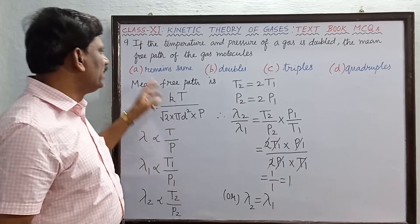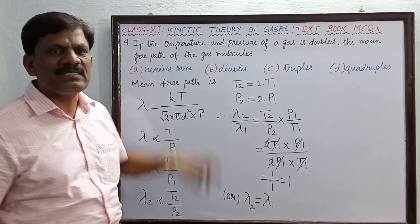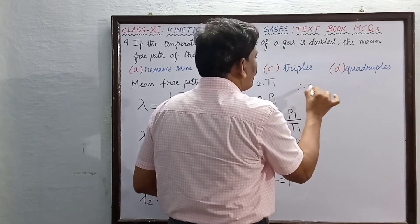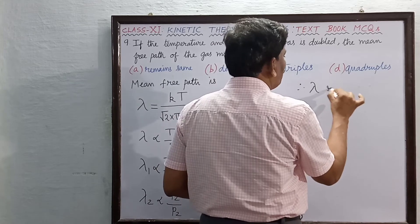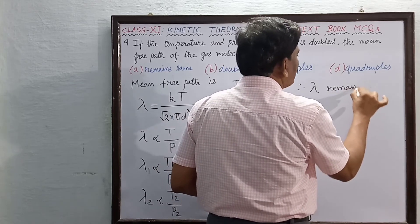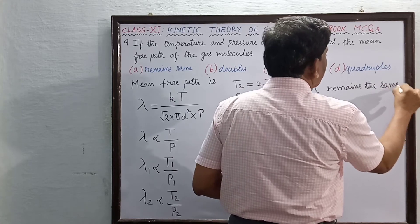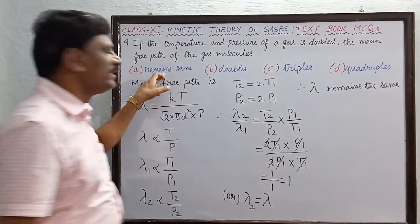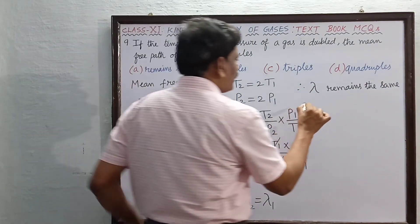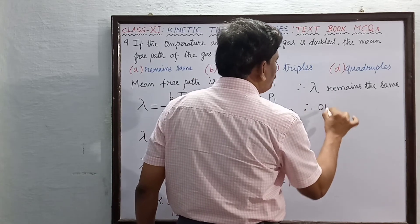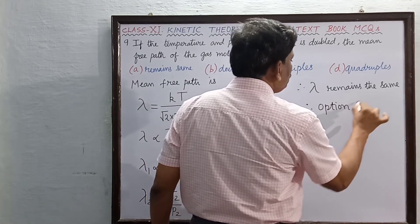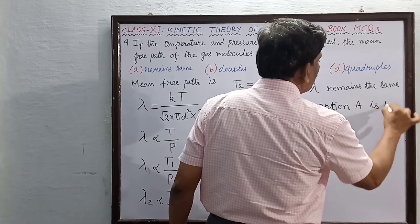Mean free path remains the same. Therefore, the mean free path lambda remains the same. This is the answer, option A itself is the right answer. Therefore option A is the answer.